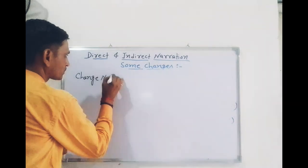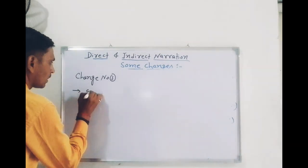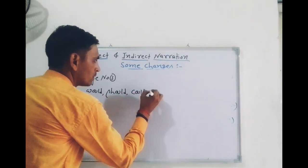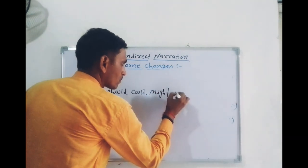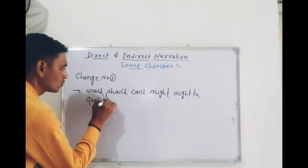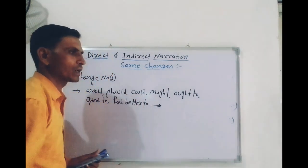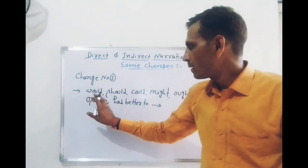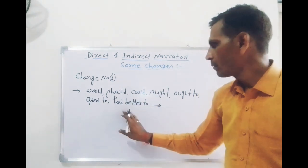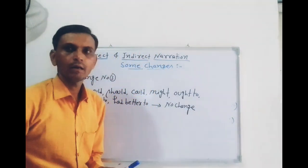अब बात करते हैं Change No. 3 की। इसमें कुछ ऐसे words हैं जो पहले से ही indirect form में होते हैं — जैसे Would, Might, Ought to, Used to, Had better। यदि sentence में ये words पहले से मिलें, तो इन्हें No Change रखते हैं, यानि इनको बदला नहीं जाता।